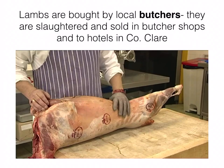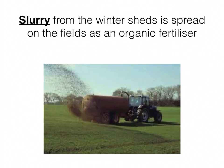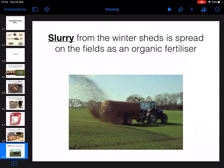Lambs are bought by local butchers and sold in butcher shops and hotels, since lamb is seen as a high-quality menu item. Another output is slurry, which goes back into the farm as an organic fertilizer, saving the farmer money - so it's both an output and feeds back in as an input. That covers the inputs, processes, and outputs of Pat's mixed farm in County Clare.